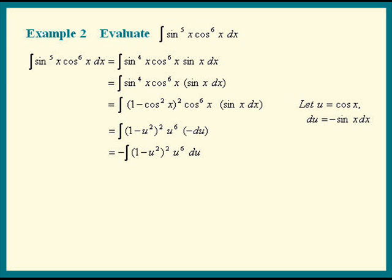We just have to multiply everything out. So square that factor out first. We have 1 minus 2u squared plus u to the 4th, all that times u to the 6th du.